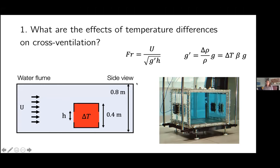You can describe the relative importance of wind and temperature on ventilation using a Froude number. The Froude number equals the wind speed divided by the square root of g-prime times h, where h is the window height and g-prime is related to the temperature difference, the coefficient of thermal expansion, and gravity. I studied this using a water flume — pretty huge, about two meters wide and almost a meter tall — with a little model room inside. There are windows in the front and back, and I can change the temperature difference between inside and outside, and also have a flow going past it.